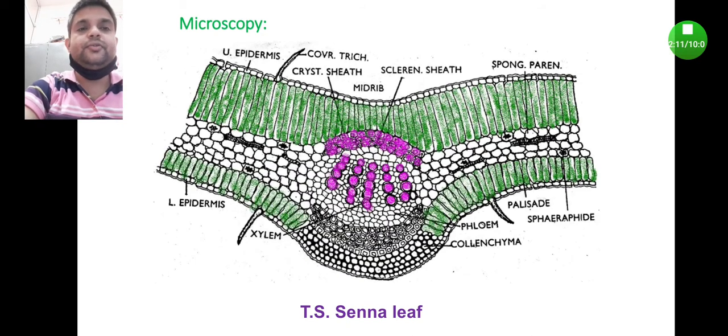Now coming to the microscopy, when you take the transverse section of the Senna under the microscope you will observe the following features. As usual, when you take the transverse section of any leaf, it consists of mainly two parts: lamina part and the midrib part.